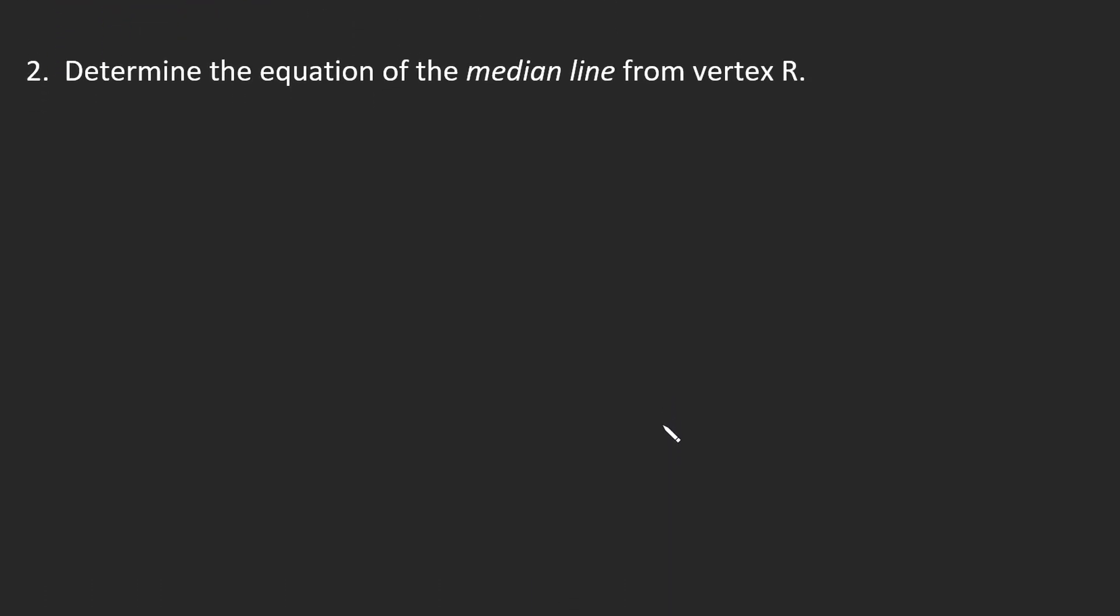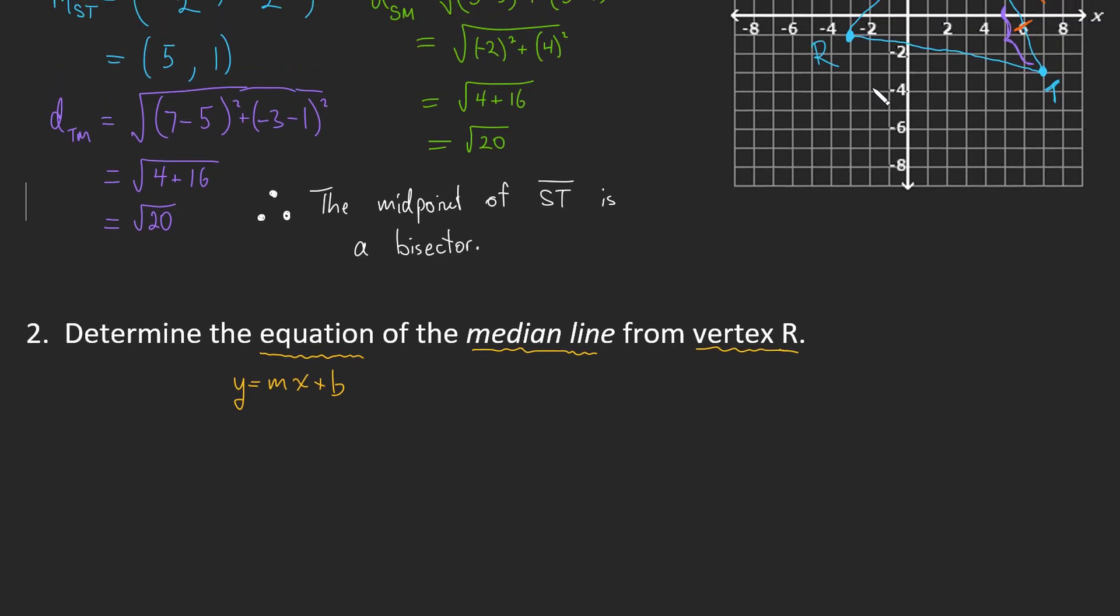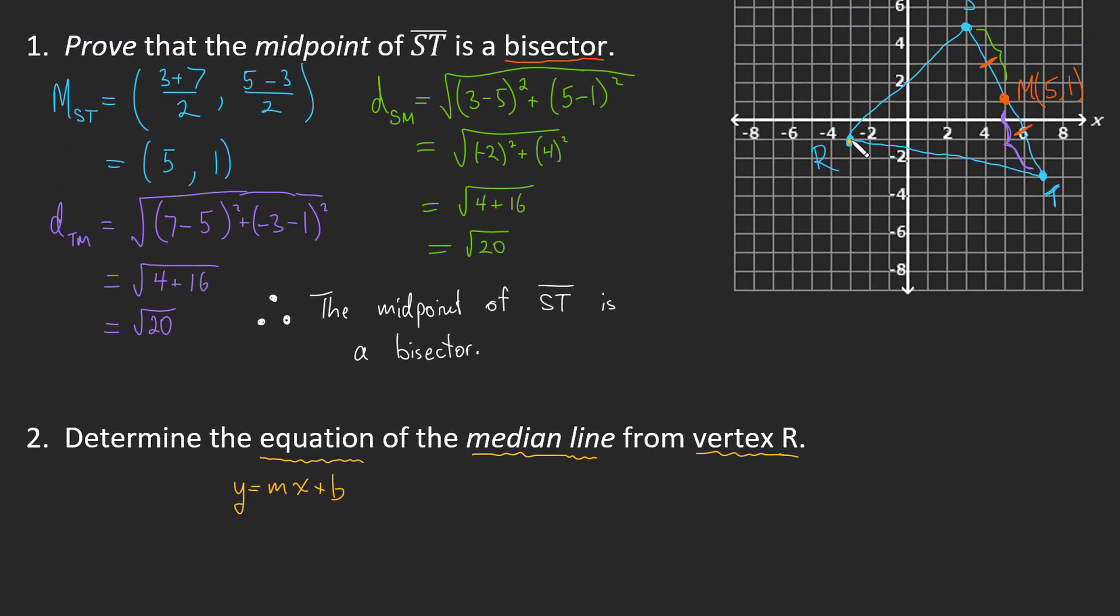Now what we're going to be asked to do is determine the equation of the median line from vertex R. That's a lot to take in there. So let's just decipher what this means. So equation of a line is y equals mx plus b. What is a median line from vertex R? Well, the hint is from vertex R, so let's start at vertex R, which I'll highlight in yellow.